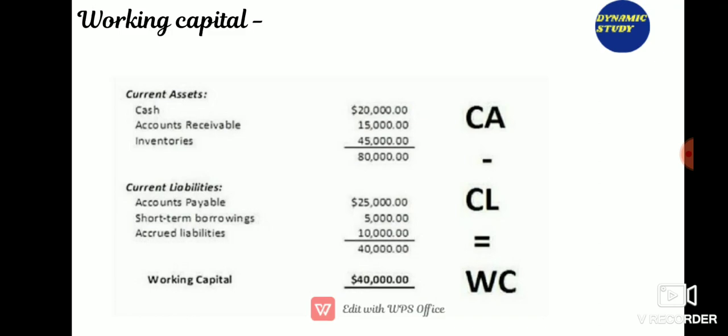Black-Scholes model is another commonly used option pricing model, discovered in 1973 by Fisher Black and Myron Scholes, both of whom received the Nobel Prize. The main advantage of this model is that it lets you calculate a very high number of option prices in a very short time. A swap is a derivative contract made between two parties to exchange cash flows — the receiver gets floating exchange rate at LIBOR and the payer pays a fixed rate.